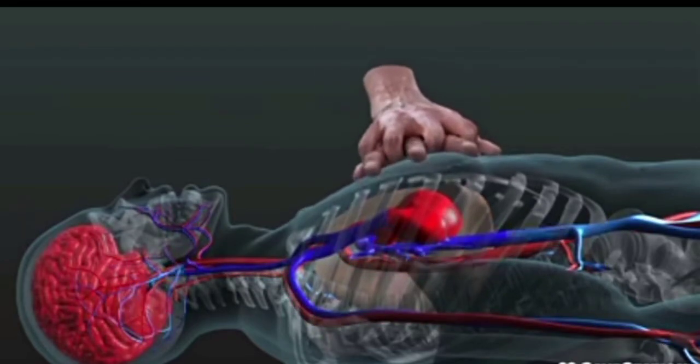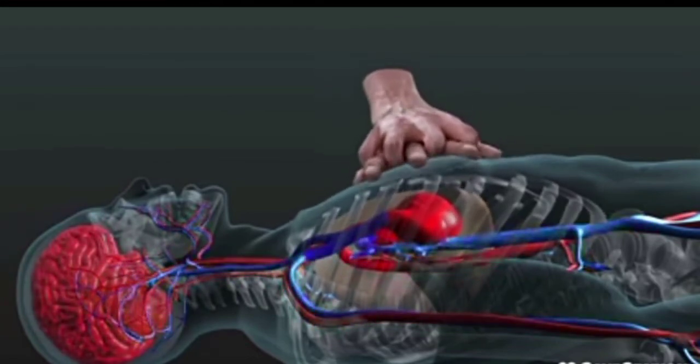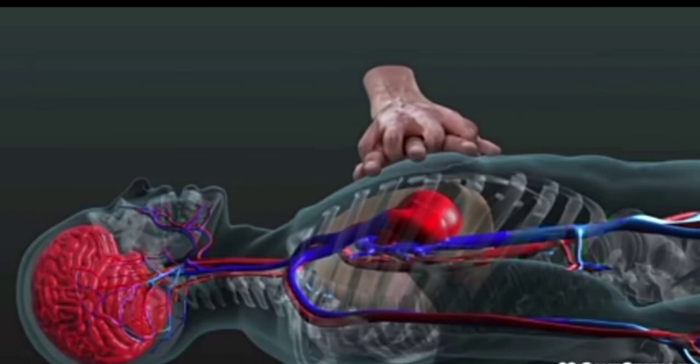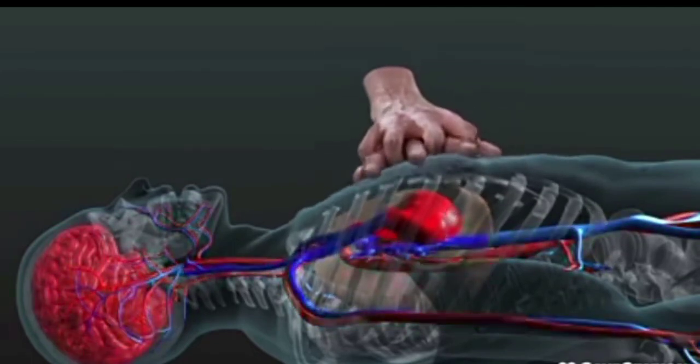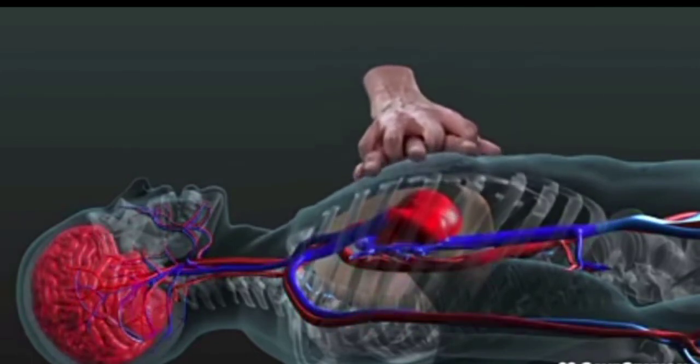So remember, the key purpose of delivering compressions is to keep oxygenated blood moving within the heart and up to the brain to keep the brain alive. We need to push hard and push fast in the center of the chest.